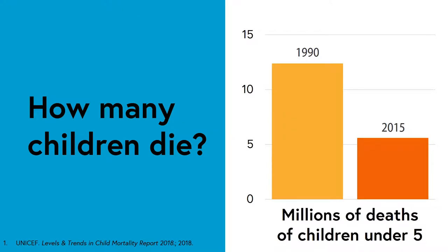So to the first part of our question: how many children die? UNICEF estimates that in 2015, globally 5.6 million children under the age of 5 died. Each of these deaths is a tragedy affecting an individual, a family and a community. What is more, many of these 5.6 million tragedies are preventable.